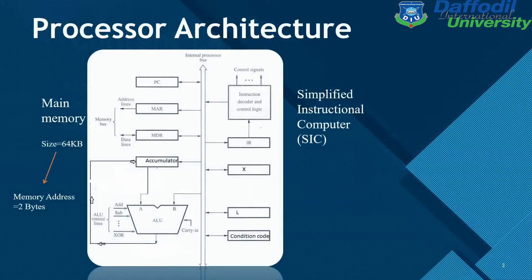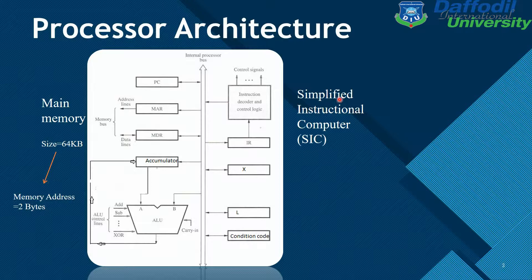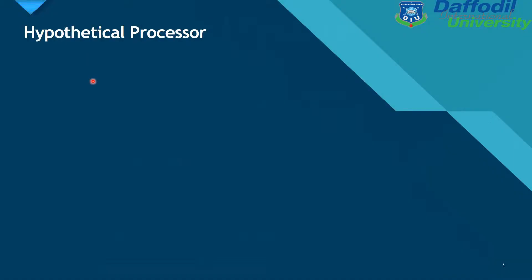This is the processor architecture. The main memory size is 64 bits and the memory address is 2 bits. This is a simplified instructional computer, and I will discuss the hypothetical processor based on this architecture.